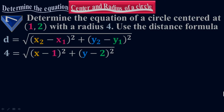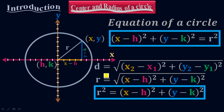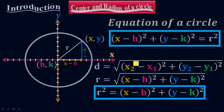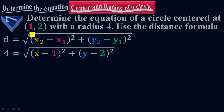Let me walk you through back and recap it again. The distance is from the center up to the border, which is the radius, so d equals to r. x sub 2 is my x, and x sub 1 is my h, so just plug in x sub 1 equals to h. y sub 2 is y, and y sub 1 is k, so just plug in y sub 1 equals to k. That's why I plug in x sub 1 equals to 1, which is my h, and y sub 1 equals to 2, which is my k.